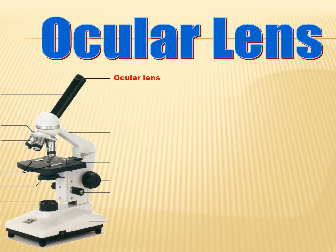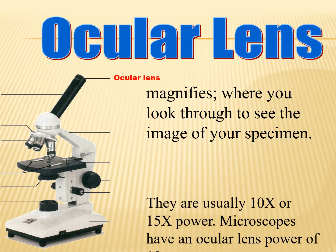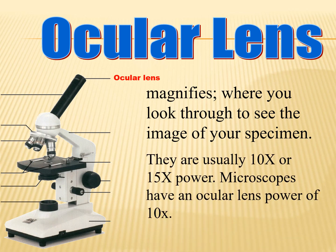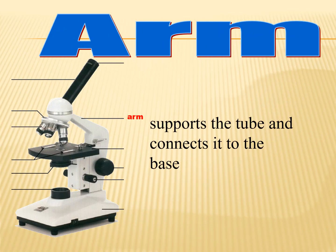The ocular lens is the lens you look through to see the image of your specimen — it magnifies the image and is usually 10x or 15x power. Most microscopes have an ocular lens power of 10x. The arm supports the tube and connects it to the base.